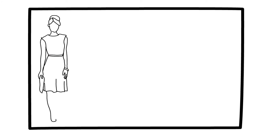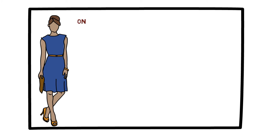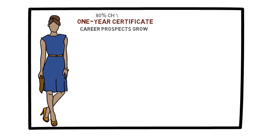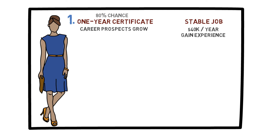Let's look at an example. Suppose you have graduated from college and want to study for one year to earn an extra certificate. If you do this, your career prospects will grow. You estimate that you have an 80% chance of passing the exam needed to get the certificate — this is option one. On the other hand, you have already been offered a job that pays $40,000 a year. It is not the ideal job, but you know that if you take it, you will start gaining experience in that field. This is option two.